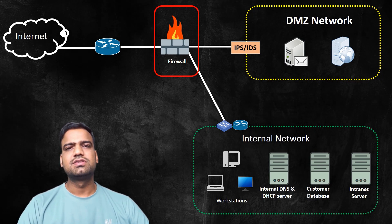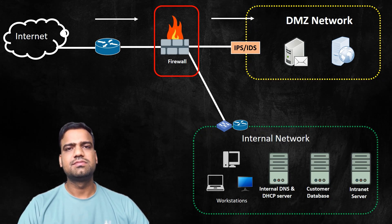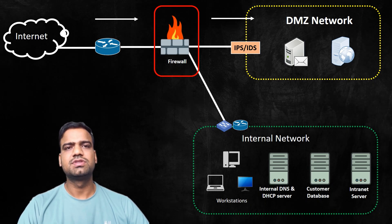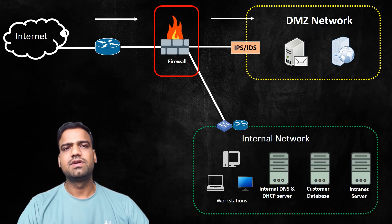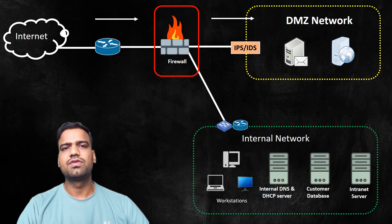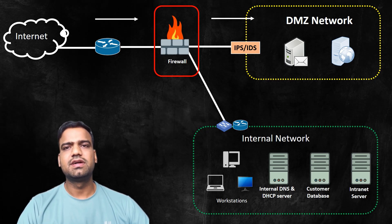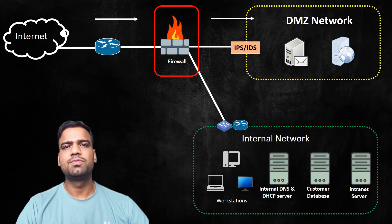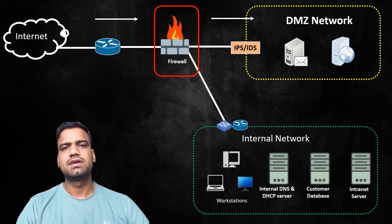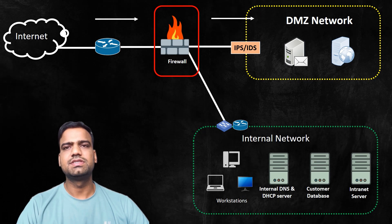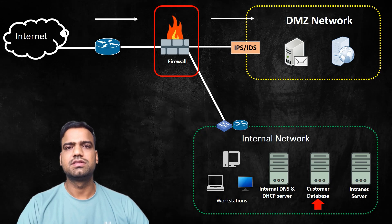The firewall ensures that incoming traffic from external sources is directed into the DMZ, where services intended for outside use are located. The firewall routes external requests to the web server, maintaining a controlled and secure flow of traffic. Critical organizational assets are not located in the DMZ to avoid direct exposure to potential attacks from external sources. For example, the main database containing sensitive customer information is placed within the internal network, not in the DMZ, to mitigate security risks.